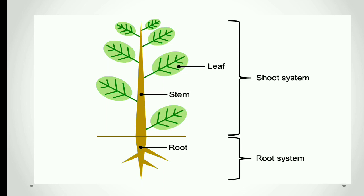The shoot has a stem, branches, leaves, buds, flower, and fruits.